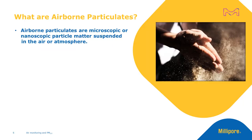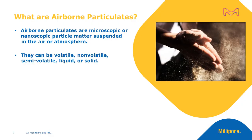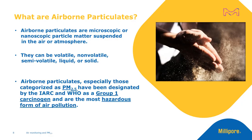What, then, are airborne particulates? Airborne particulates are microscopic or nanoscopic particle matter suspended in the air or atmosphere. These can be either volatile, non-volatile, semi-volatile, liquid, or solid. Airborne particulates, especially those categorized as PM2.5, are broadly designated by the IARC and WHO as a Group 1 carcinogen and are effectively the most hazardous form of air pollution.